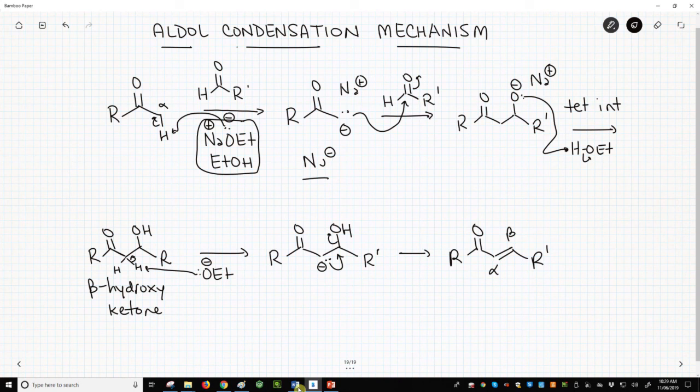So, we have potentially two methods to prepare alpha-beta unsaturated ketones. Either use the aldol reaction with an additional elimination or use the aldol condensation.